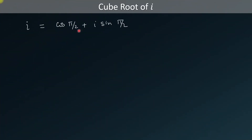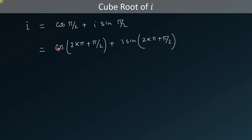Iota can be written as cosine(π/2) + i·sine(π/2), because the value of cosine(π/2) is equal to 0 and the value of sine(π/2) is equal to 1. We can write iota in general form as cosine(2kπ + π/2) + i·sine(2kπ + π/2), for k = 0, 1, and 2, because the value of iota will remain the same at k = 0 and k = 3.